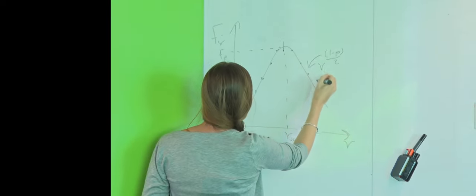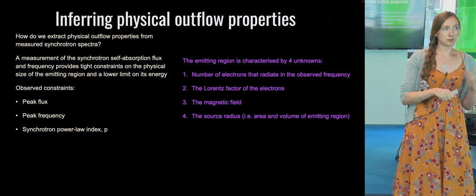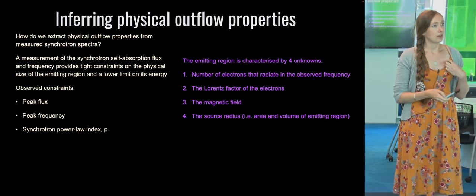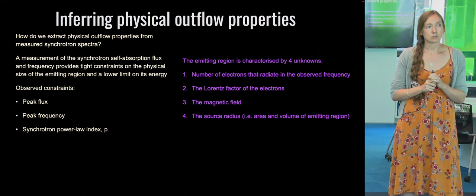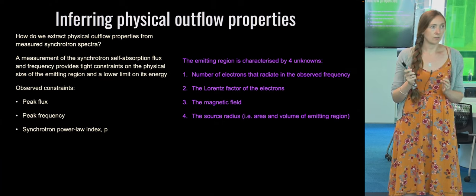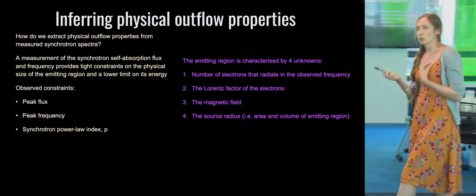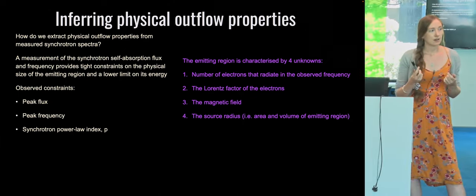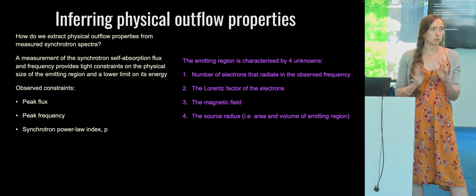There are three constraints we can measure just by observing our radio spectrum. But the emitting region is characterized by four unknowns: the number of electrons radiating at the observed frequency, the Lorentz factor γ of those electrons, the magnetic field strength B, and the source radius R. With three observed constraints and four unknowns, we don't have enough to fully characterize the system — we need a fourth assumption or constraint equation.